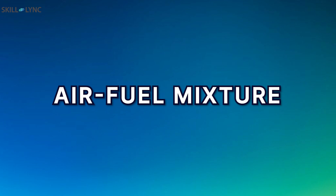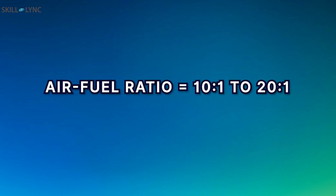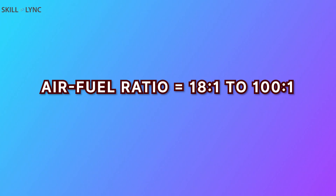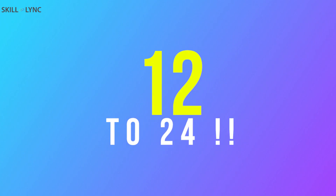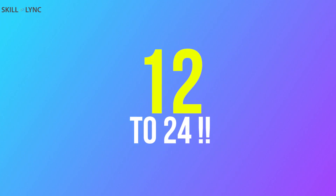SI engines use an air fuel ratio of 10:1 to 20:1. On the other hand, CI engines employ an air fuel ratio of 18:1 to 100:1. Furthermore, SI engines have a compression ratio of up to 11, compared to 12 to 24 for CI engines. This is because in CI engines, the air needs to be compressed more for the ignition process to take place.